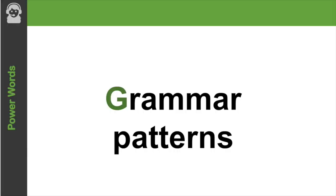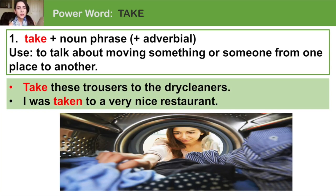Now, let's look at grammar patterns with the word take. The first pattern is take plus a noun phrase, and sometimes it is followed by an adverbial. An adverbial is a word that helps describe how something happens. We use this to talk about moving something or someone from one place to another. Here are some examples.